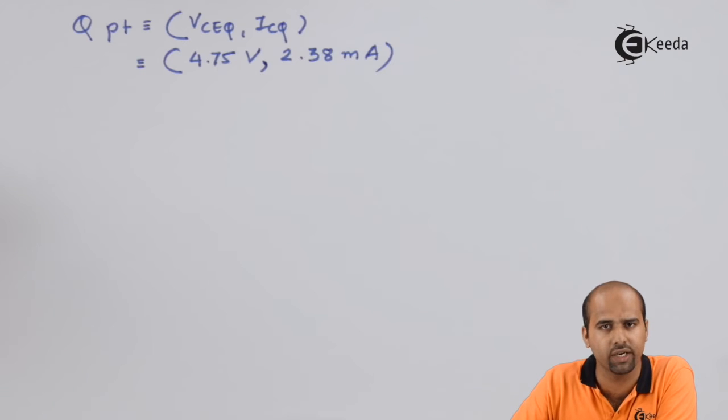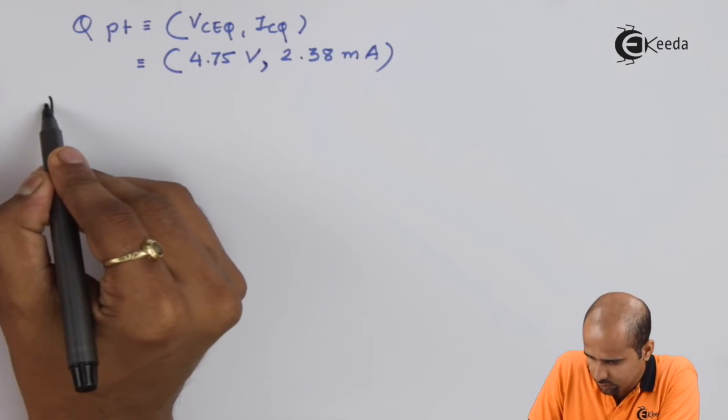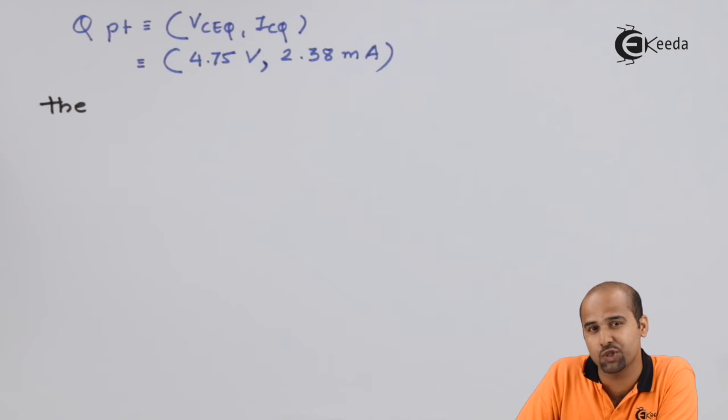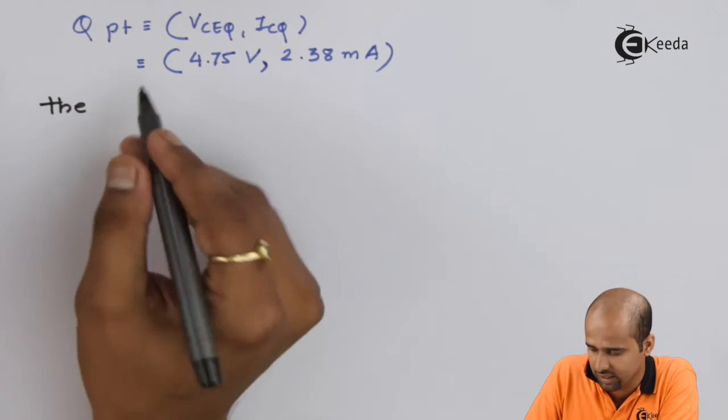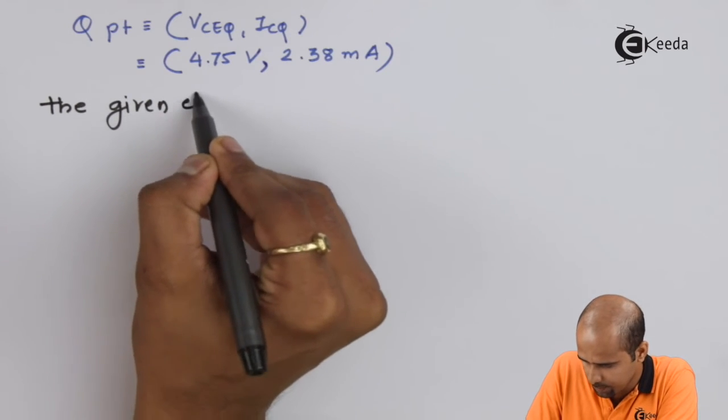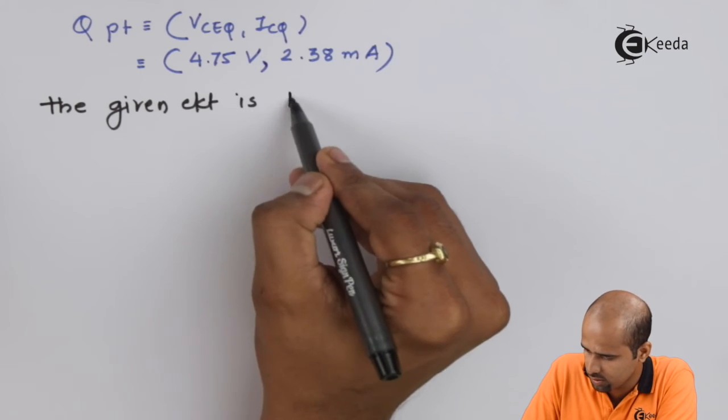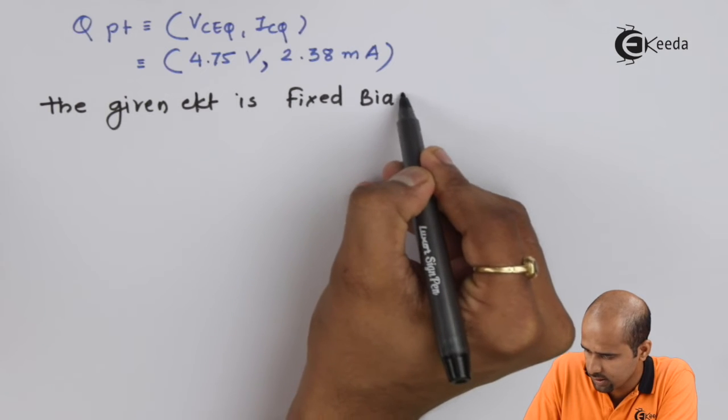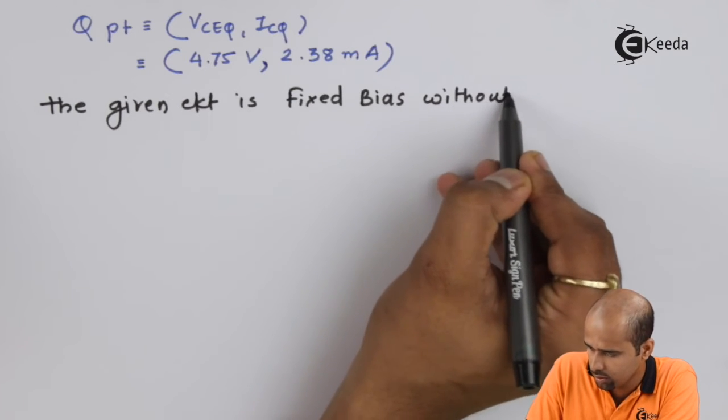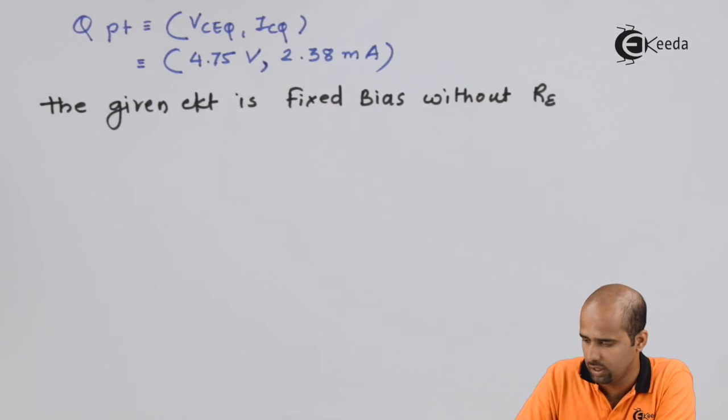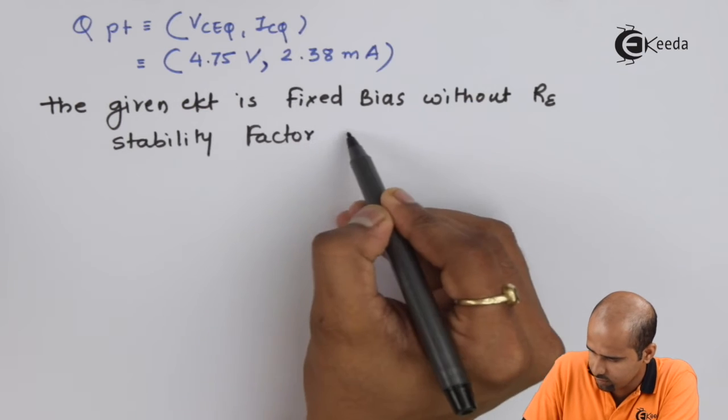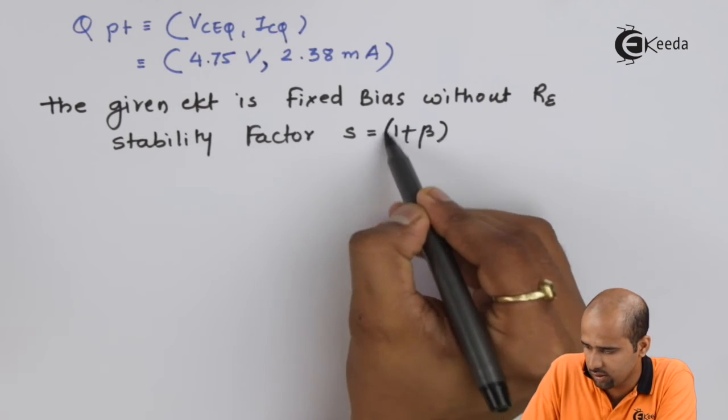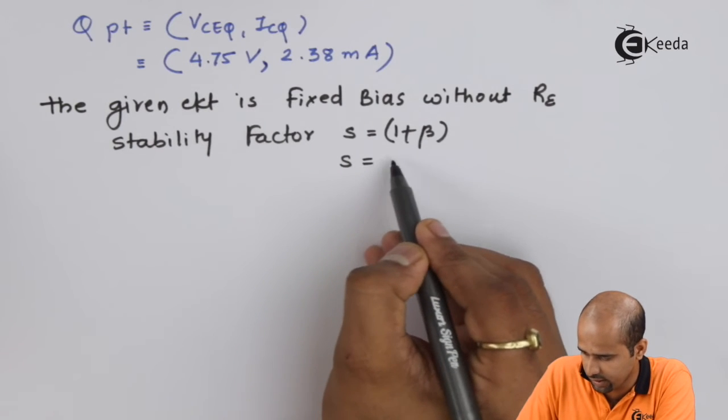Now, another part they are expecting is stability factor. The given circuit is fixed bias without RE, so stability factor S equals 1 plus beta, and beta equals 100, so S equals 101.